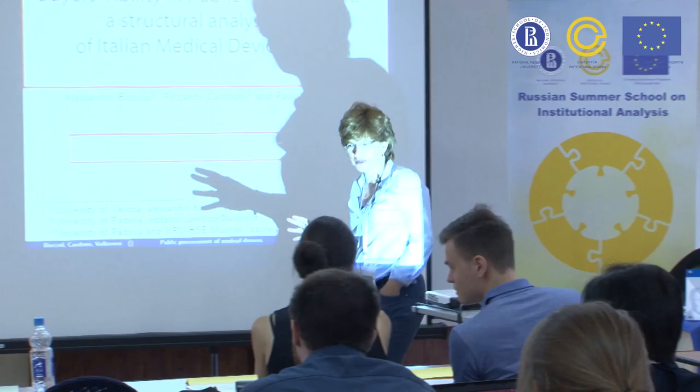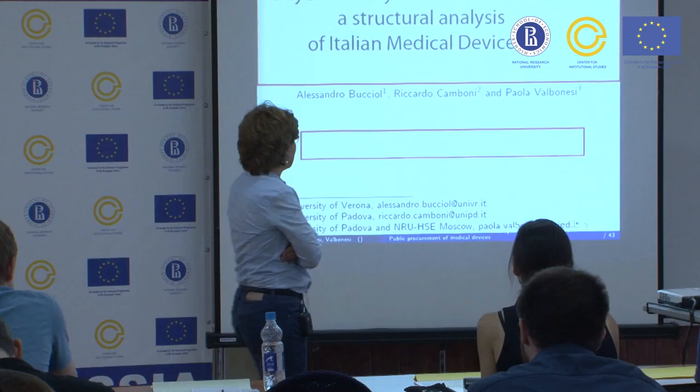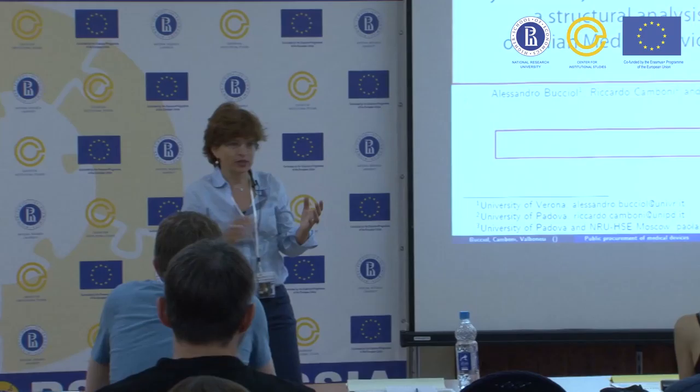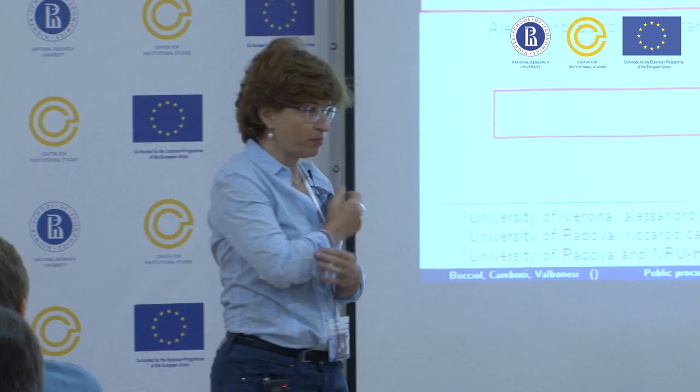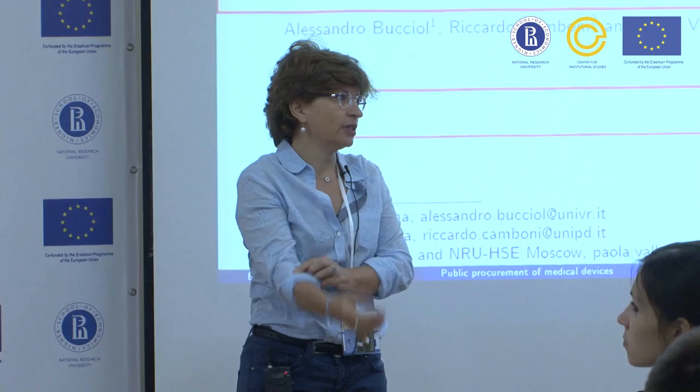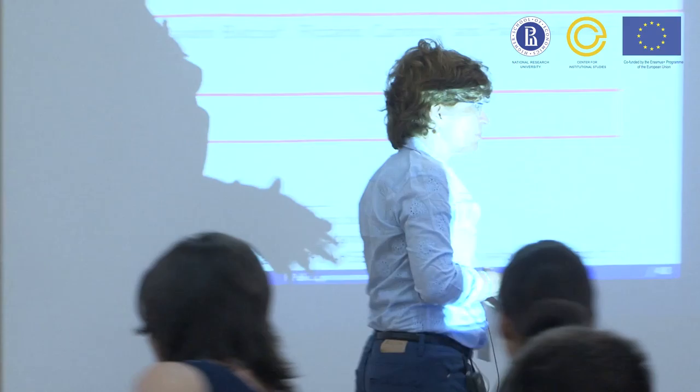Now we know everything about procurement, so we can go directly to the papers. This paper is about buyer ability in public procurement. To understand the performance of this very regulated process, it seems a really large role is played by the public buyer, even if he or she does not have a lot of discretion.